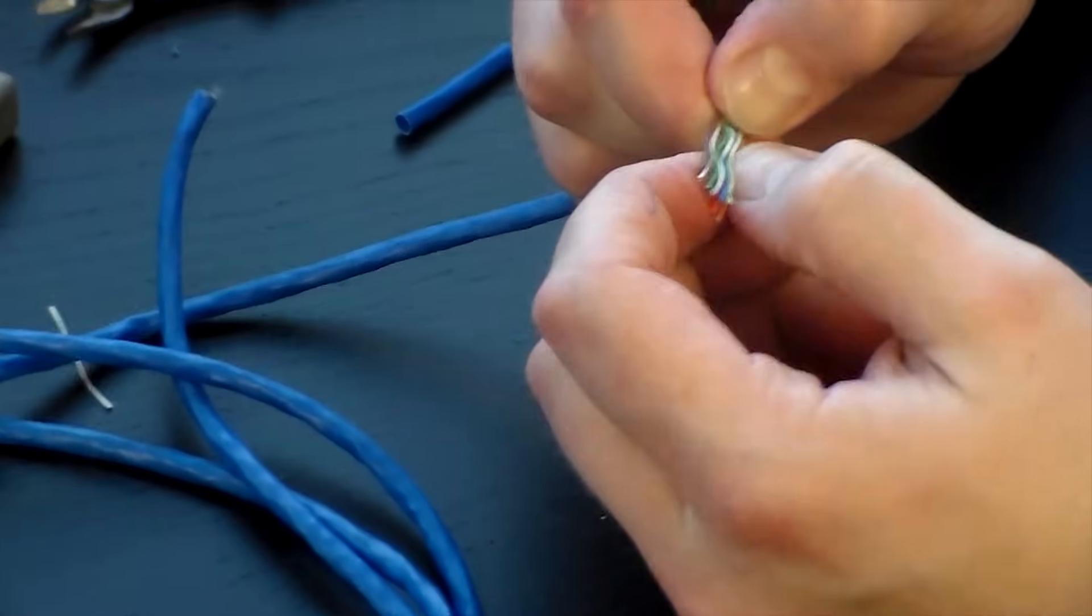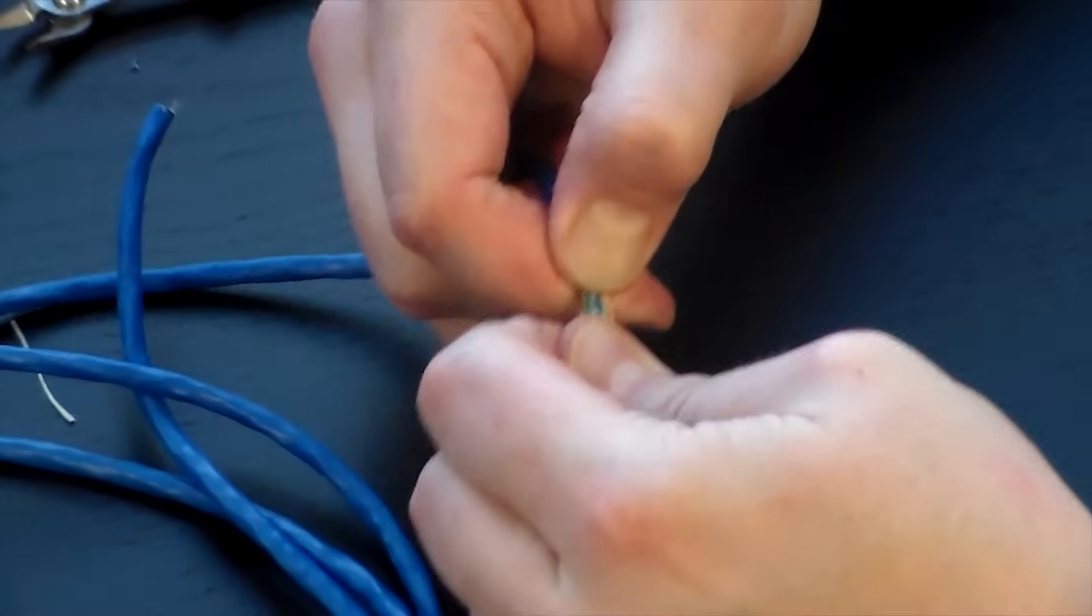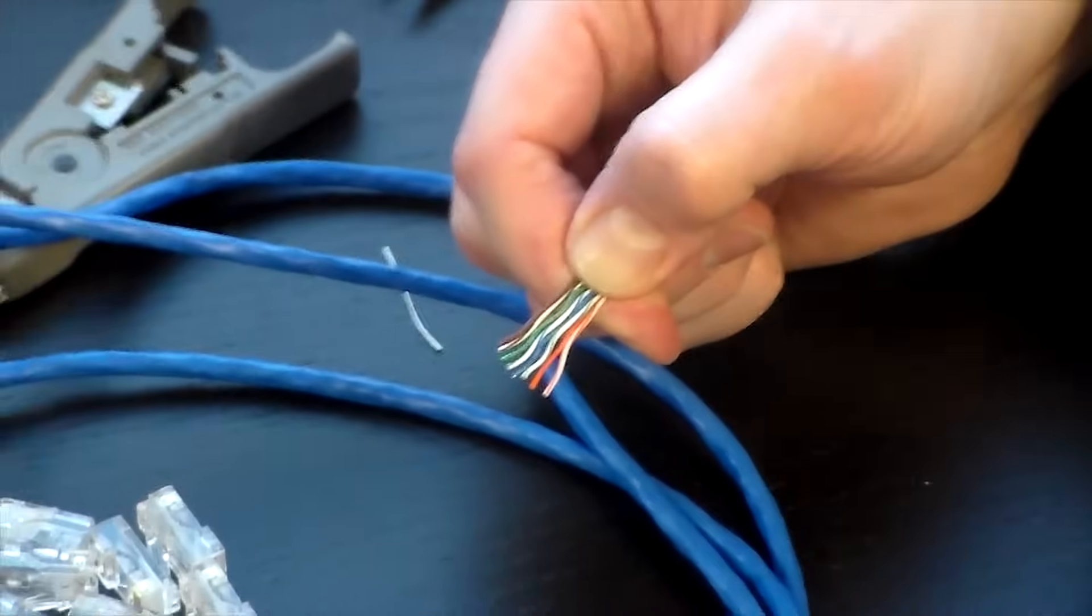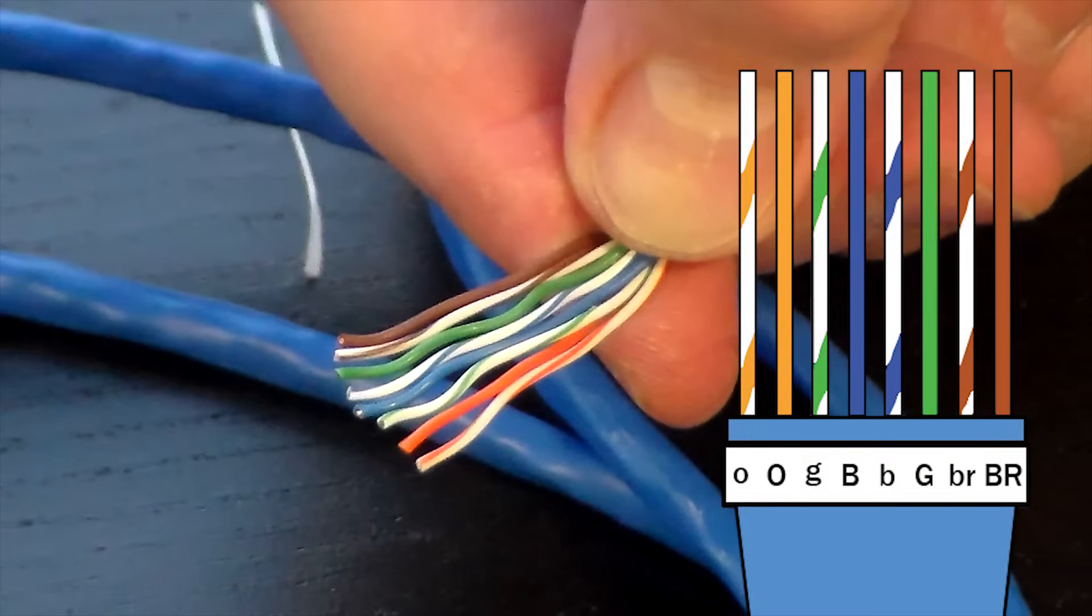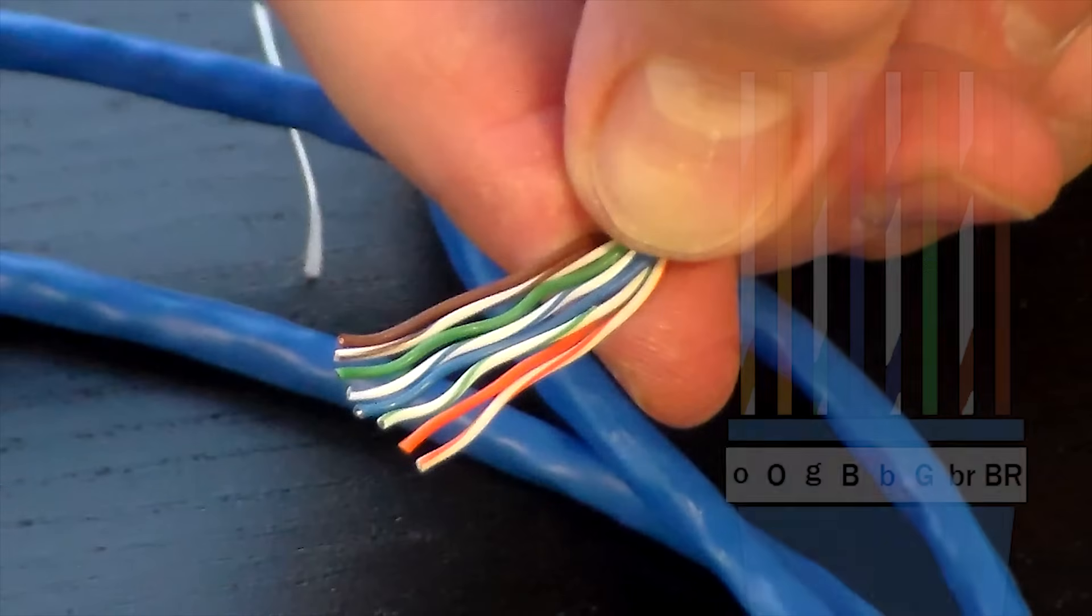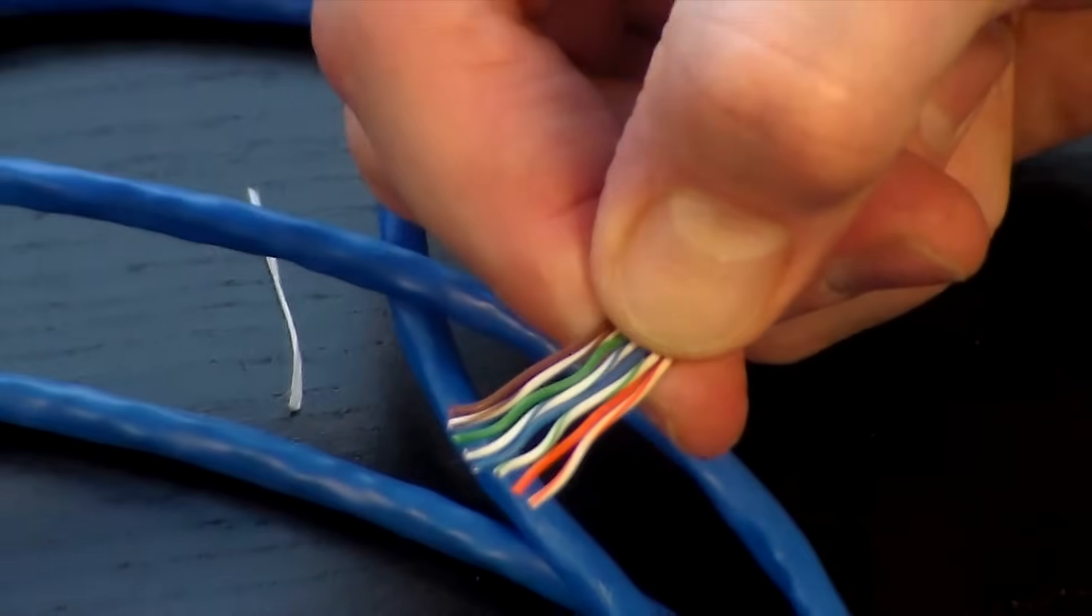Now grab your FD 500 crimping tool and cut off some of the excess wire, because we don't need that much to go inside the connector. Go ahead and grab one of your connectors.